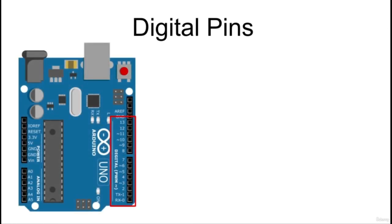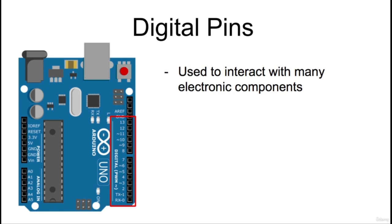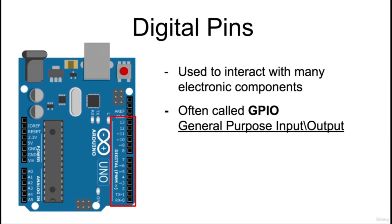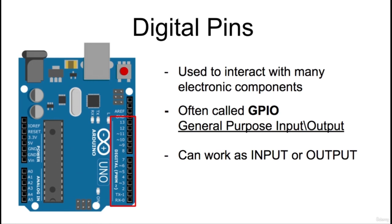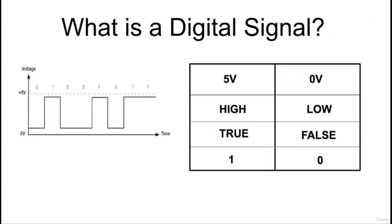Hi, and welcome to lecture number 6. In this lecture, I will introduce you to all the basics regarding digital pins and how to use them. Arduino uses these pins to interact with the world and other electronic components. These are called general-purpose input-output pins, or GPIO, because they can serve many functions and can be configured to work both as input or output. With these pins, you can read a digital value or write a digital value. Digital values are electric signals that can assume only two states, 5V and 0V, often referred to as high or low, true and false, or binary values 1 and 0.